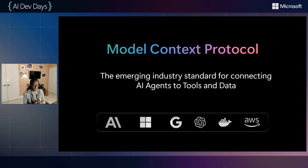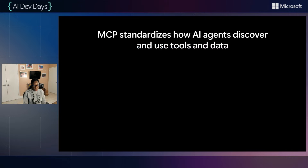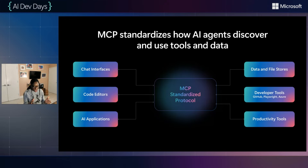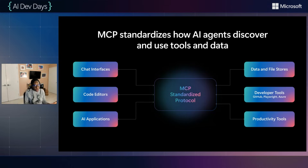With MCP, we are moving towards a unified and secure way for agents to access tools and data across enterprises and across your solutions. MCP is a standardized way AI assistants and agents securely connect to tools, data, and services. Think of it as a universal translator that allows AI tools like GitHub Copilot in VS Code, GitHub Copilot in IntelliJ, M365, Claude, and so many different MCP clients to communicate and access external data.